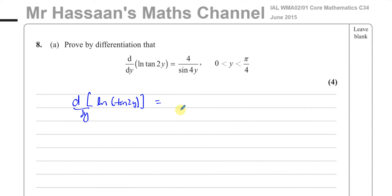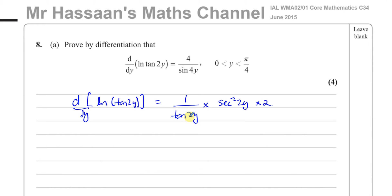When you differentiate something which is the ln of something, you end up with 1 over that same thing. So it's 1 over tan(2y), then you multiply by the differential of what's inside — the differential of tan(2y) is sec²(2y) — and then multiplied by 2, because that's inside the function. So it's three layers of the chain rule, giving you 2 times sec²(2y) over tan(2y).